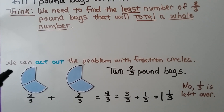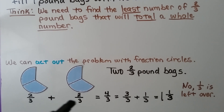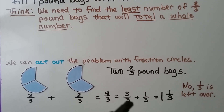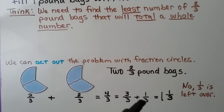We can act out the problem with fraction circles. We have 2/3 and 2/3. If we add 2/3 plus 2/3, we get 4/3. And 4/3 is equal to 3/3 plus 1/3. So we have one whole, which would be one 1-pound bag of pecans, but we still have 1/3 left over — that's 1 and 1/3. So this won't work.